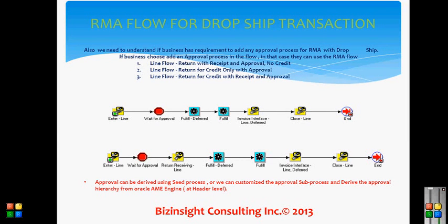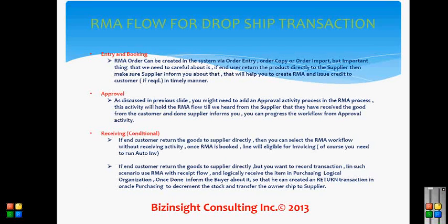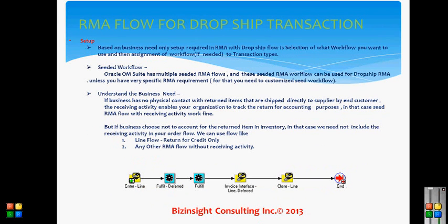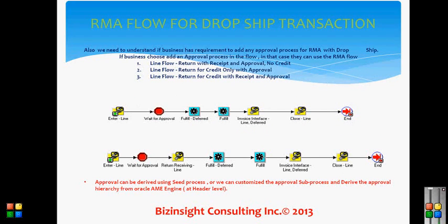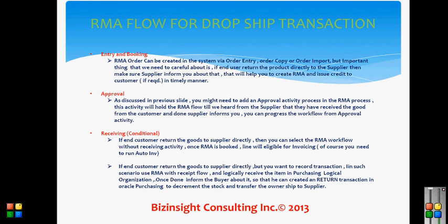Hi guys, this is a continuation of Part 1 for RMA flow for a dropship transaction. In the last part we talked about what the dropship flow is and how we can implement RMA flow for the dropship. In Part 1 we covered the setup needed and the workflows available for RMA and how to use those for dropship. In Part 2 I will talk about the few more steps required when we do the RMA flow for the dropship.